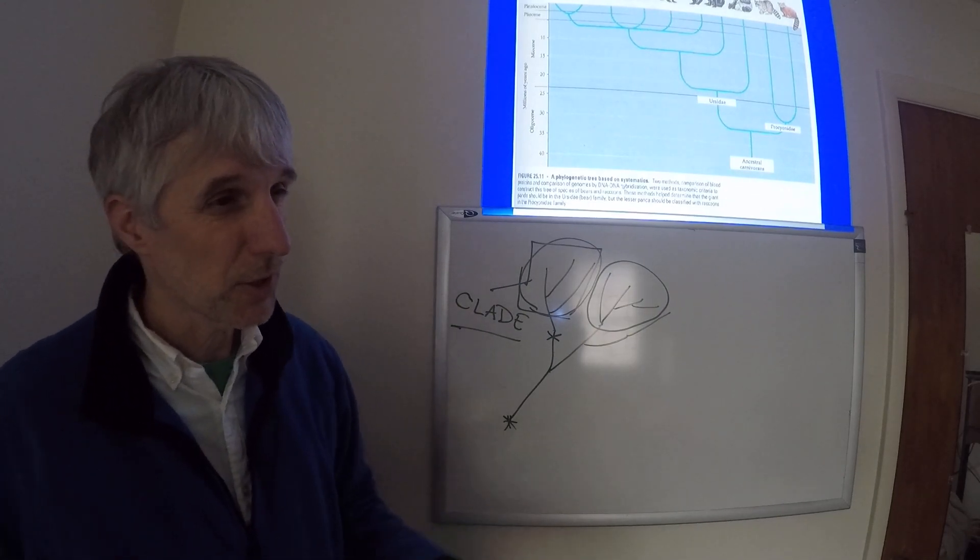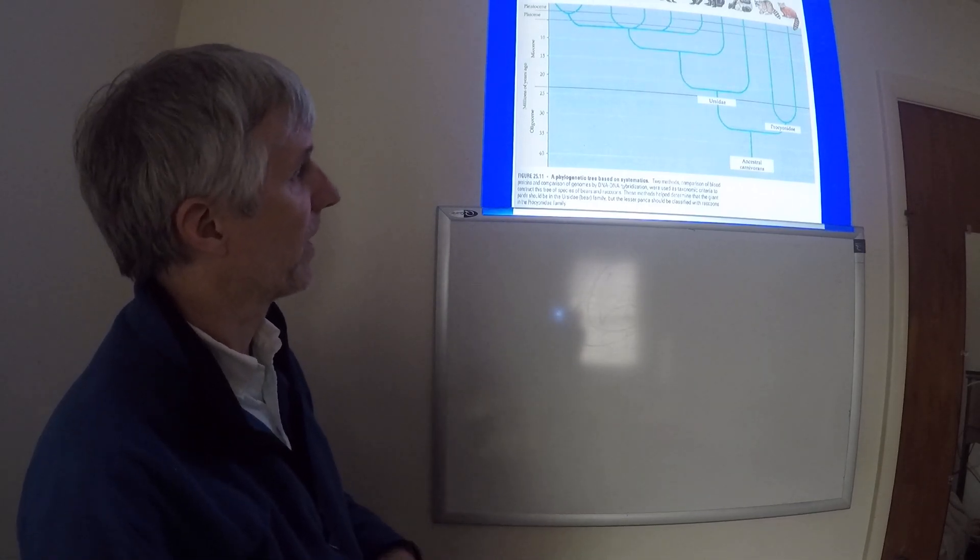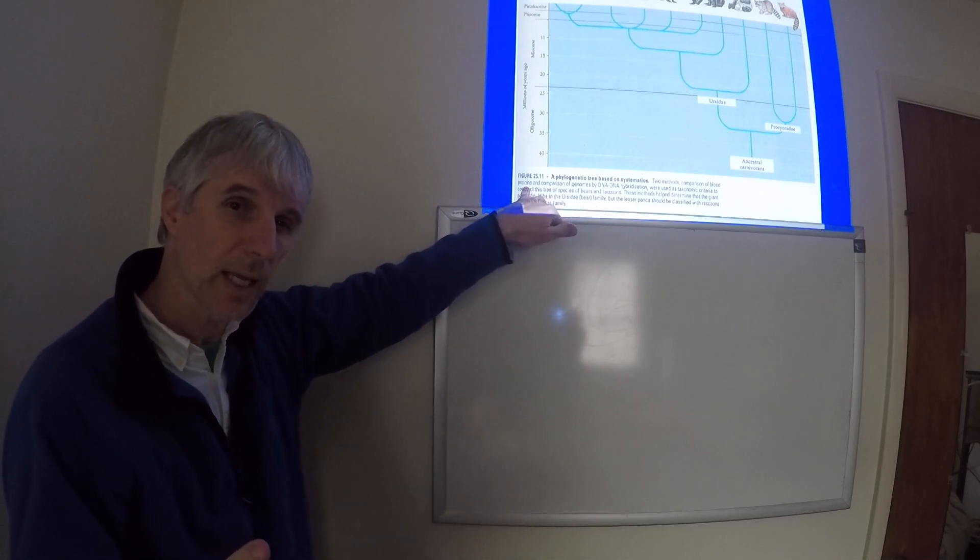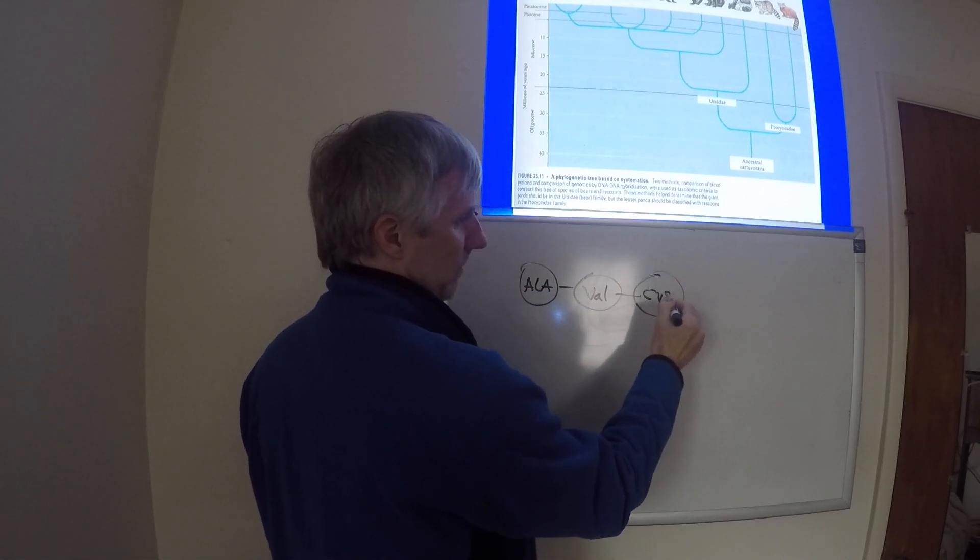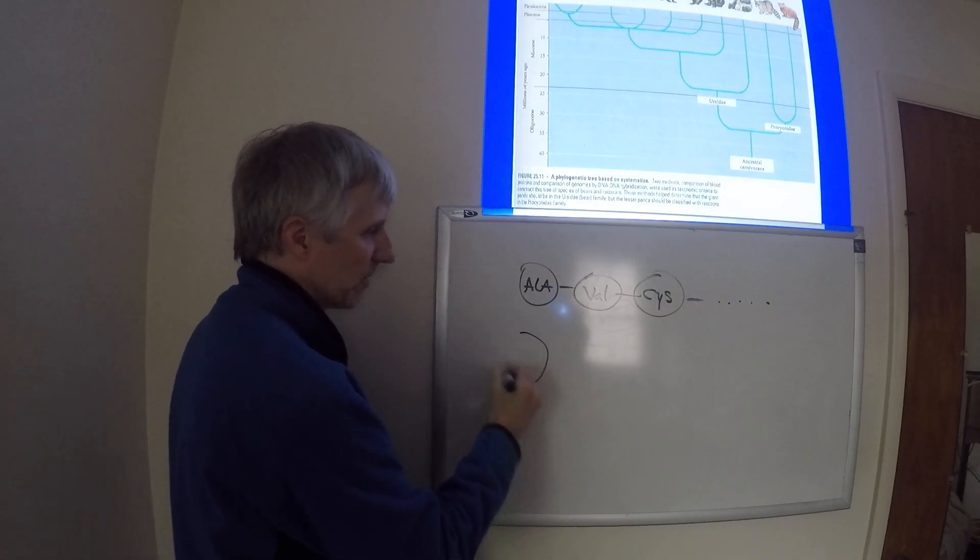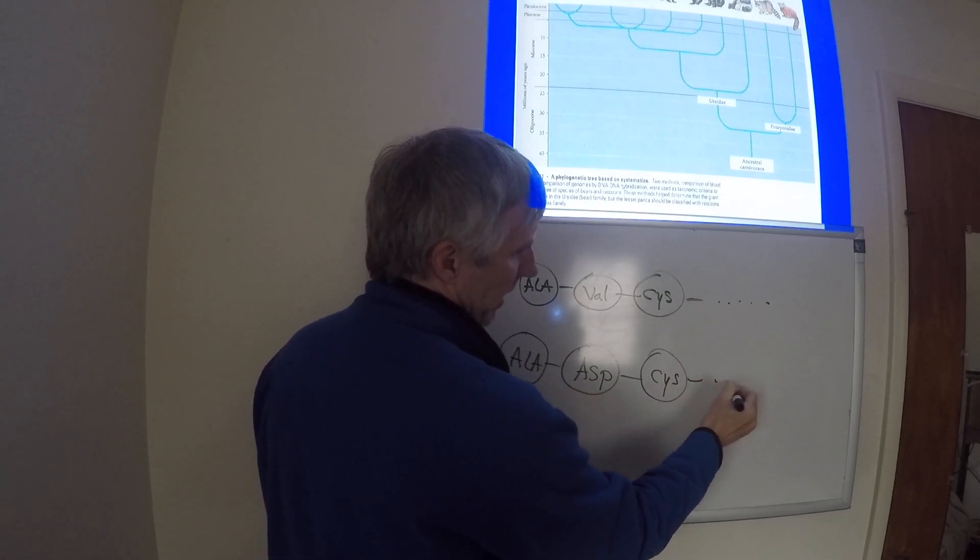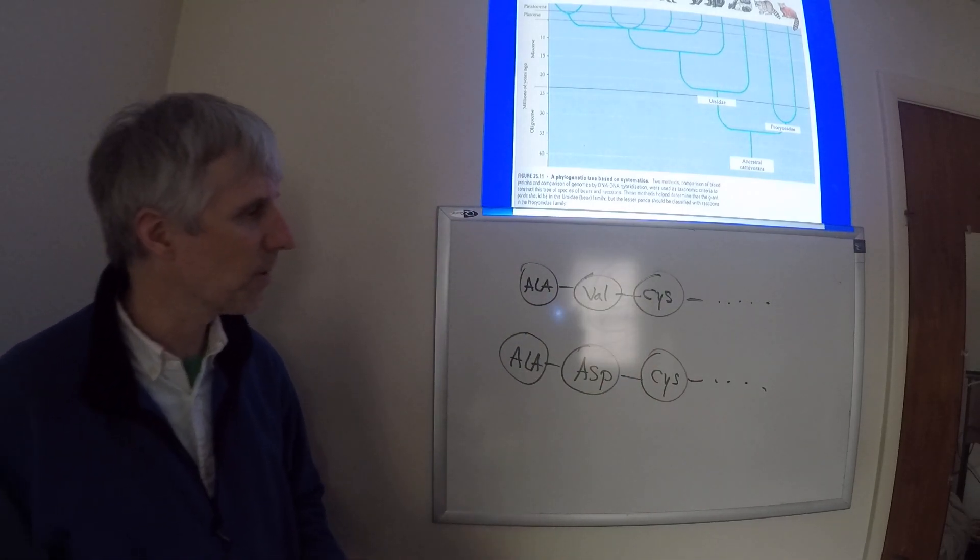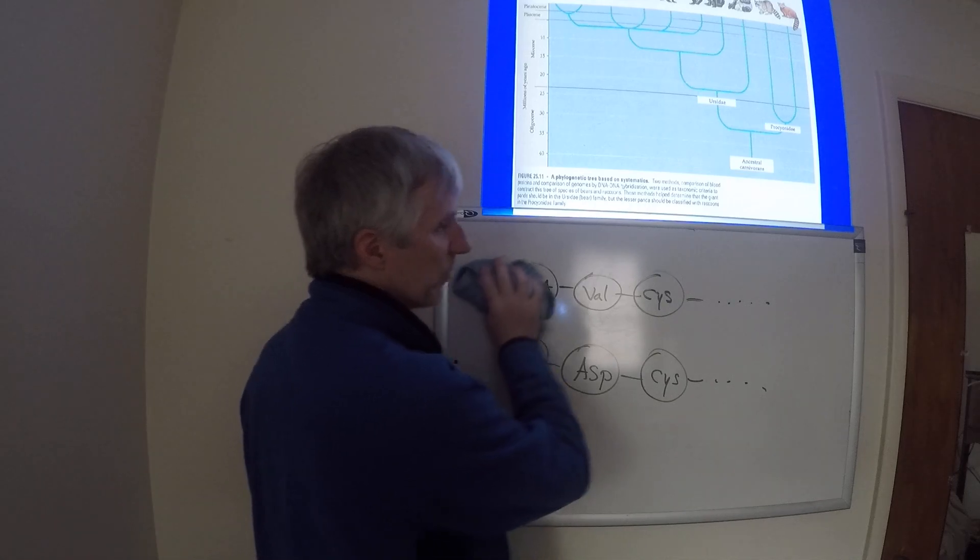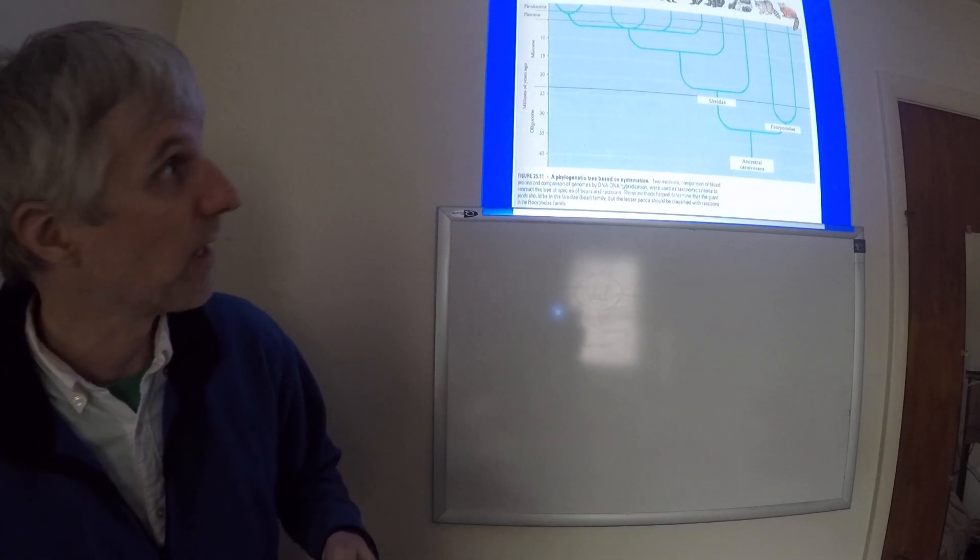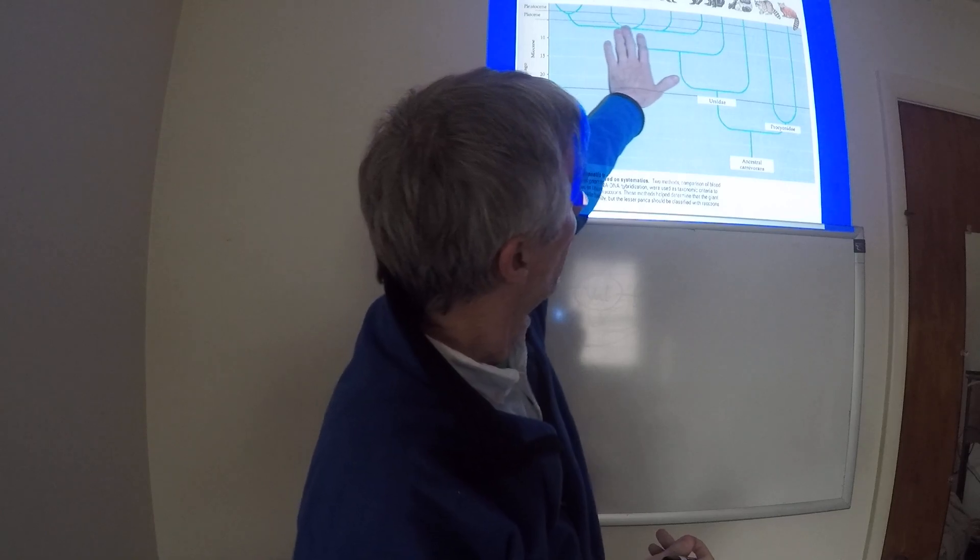You can build phylogenetic trees using different approaches besides DNA sequences or traits. This particular one was done using blood proteins. The idea is you have a sequence of amino acids. Right. And you compare that to another sequence of amino acids. Right. And you look at the similarities in the sequences. The more similar these amino acid sequences are between two individuals for the same protein, the more closely related they would be. So that's been done here for this group of animals within Ursidae, the bear family.